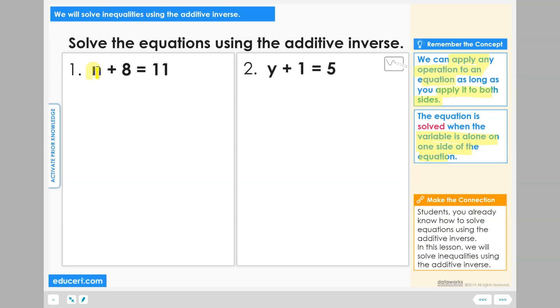So here to get this n all by itself, I need to remove the plus 8. To remove the plus 8, I use the additive inverse: subtract 8. 8 minus 8 will equal 0, and if I subtract 8 from one side, I must subtract it from the other side to keep it balanced.